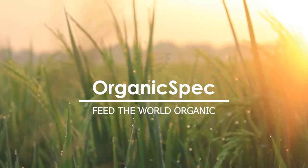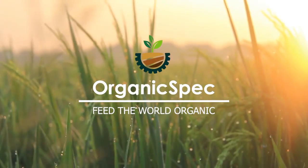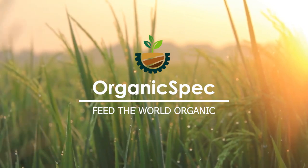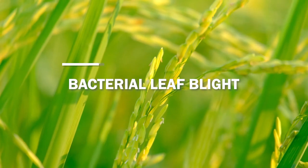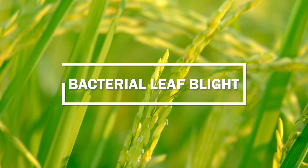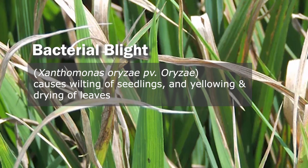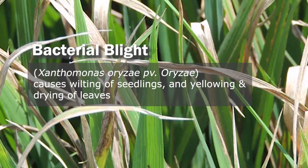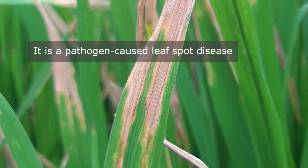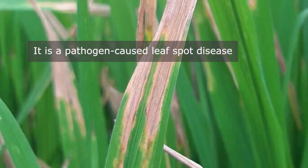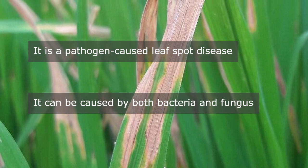Organic Spec Private Limited promotes and facilitates organic farming for better human health, better plant health, and better environment. Bacterial leaf blight causes wilting of seedlings and yellowing and drying of leaves. It is a pathogen-caused leaf spot disease that can be caused by both bacteria and fungus.